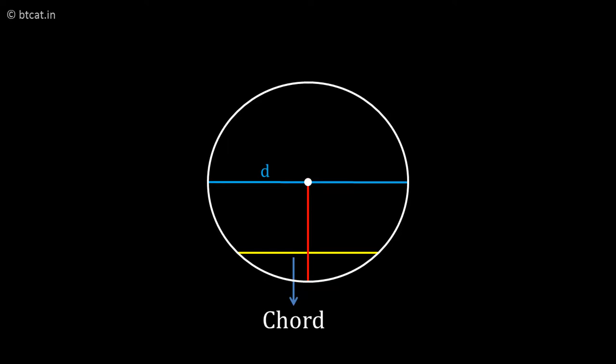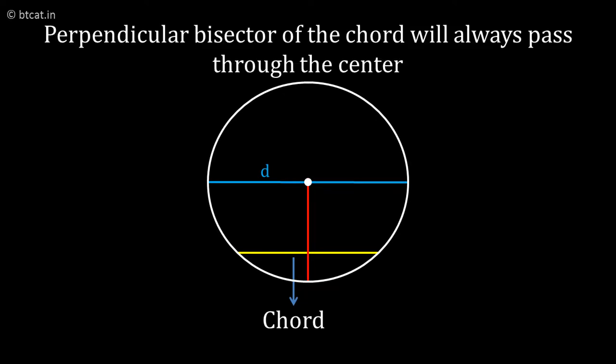So this theorem itself can be probably understood in three different ways. The perpendicular bisector of the chord will always pass through the center of the circle. If I join the midpoint of the chord to the center of the circle, the angle made at the chord will be 90 degrees and so on. Basically, it is the same thing.